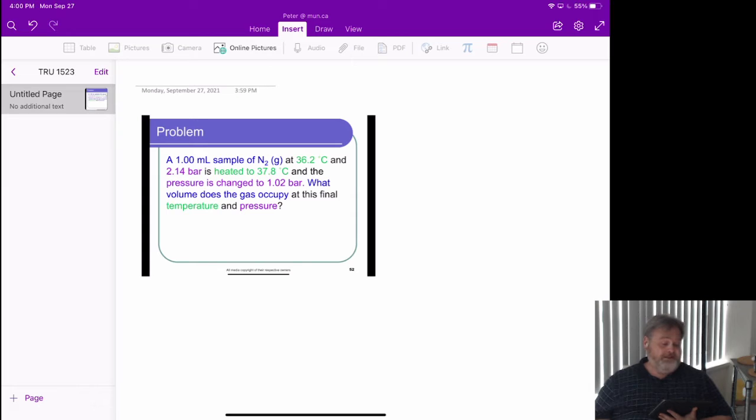A 1.00 milliliter sample of nitrogen gas at 36.2 degrees Celsius, going to need to change that to Kelvin, and 2.14 bar is heated to 37.8 degrees Celsius, again Kelvin, and the pressure is changed to 1.02 bar. What volume does the gas occupy at this final temperature and pressure?